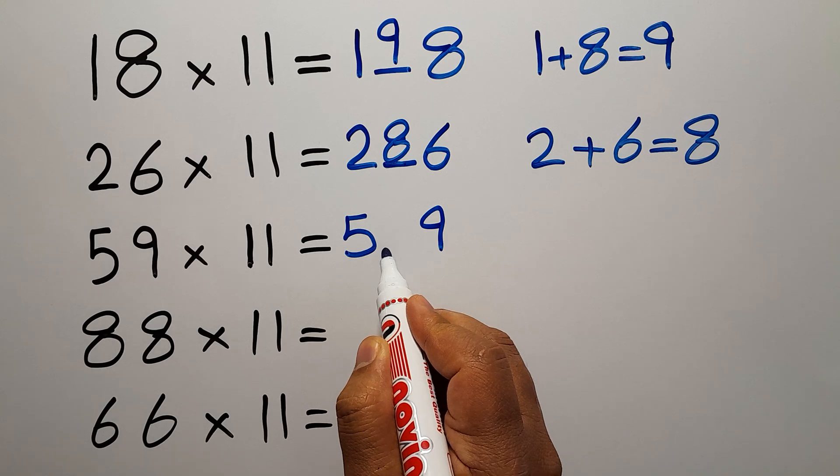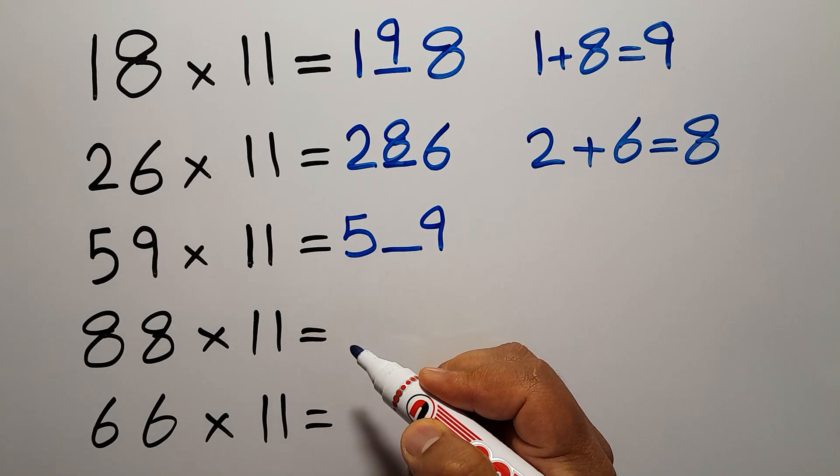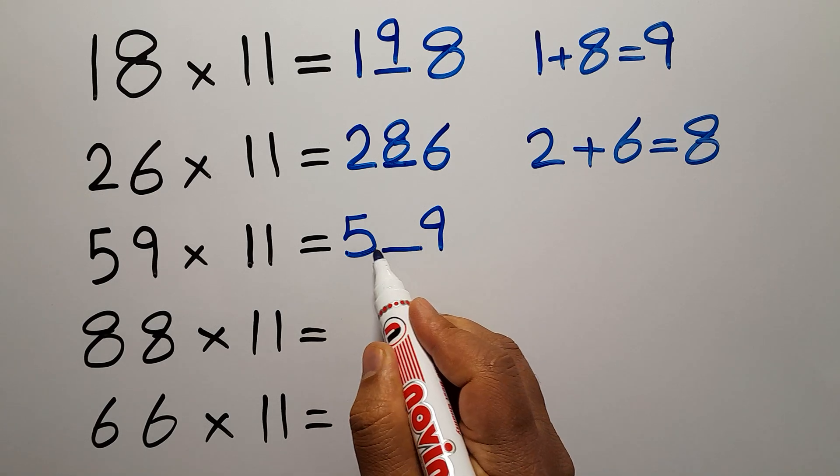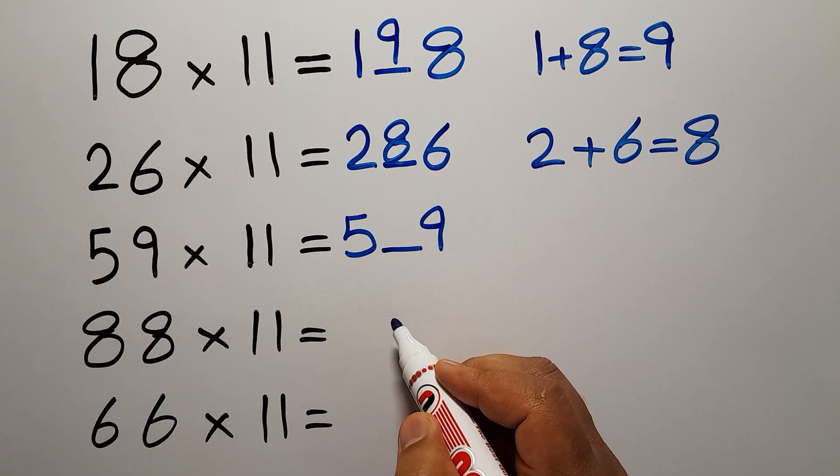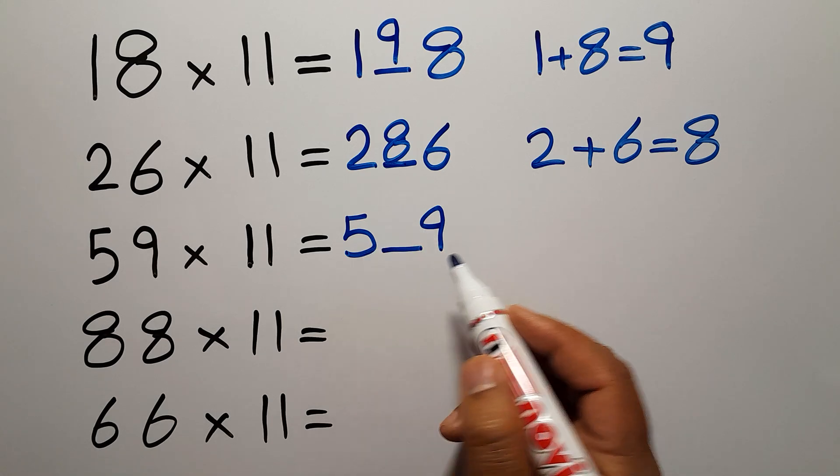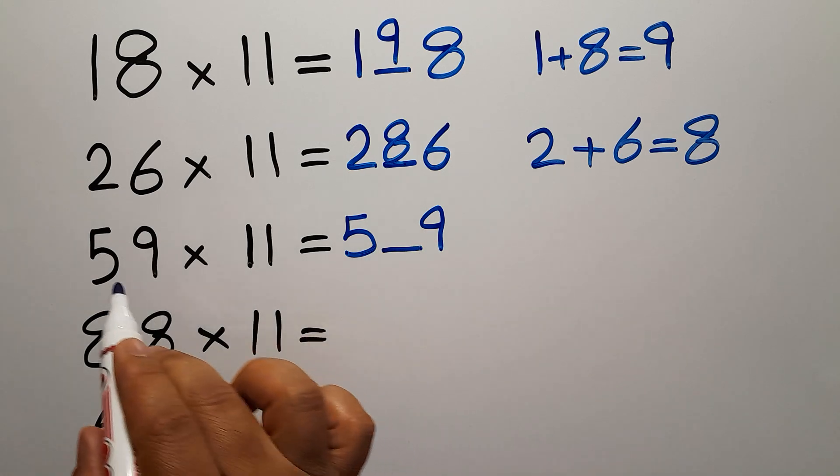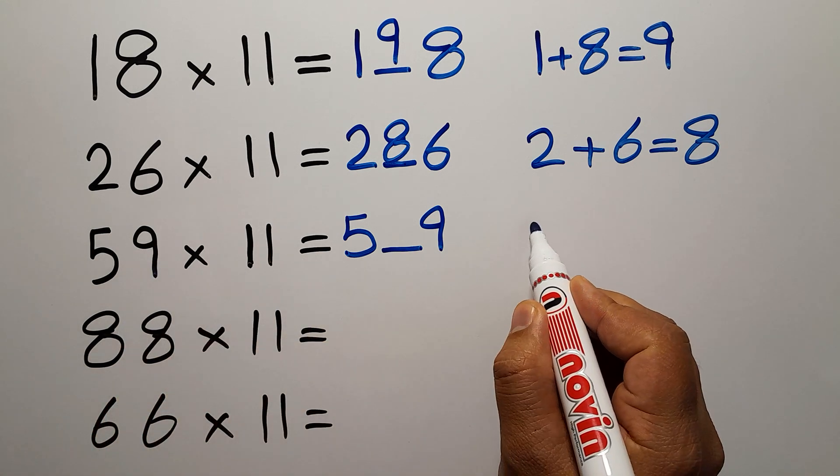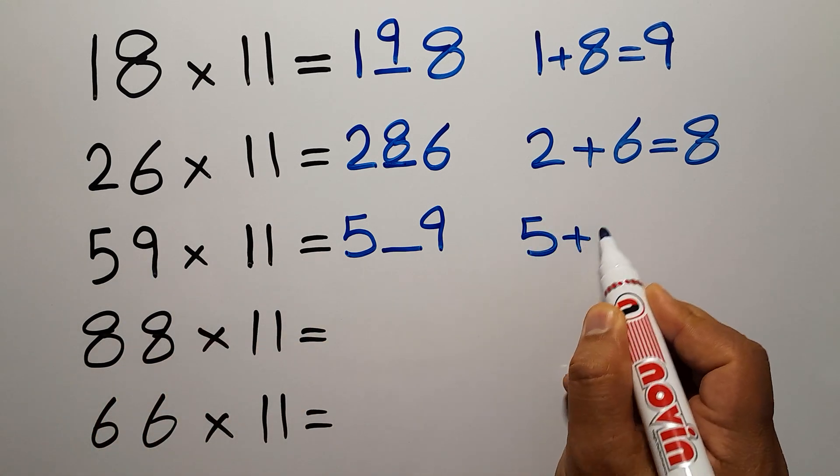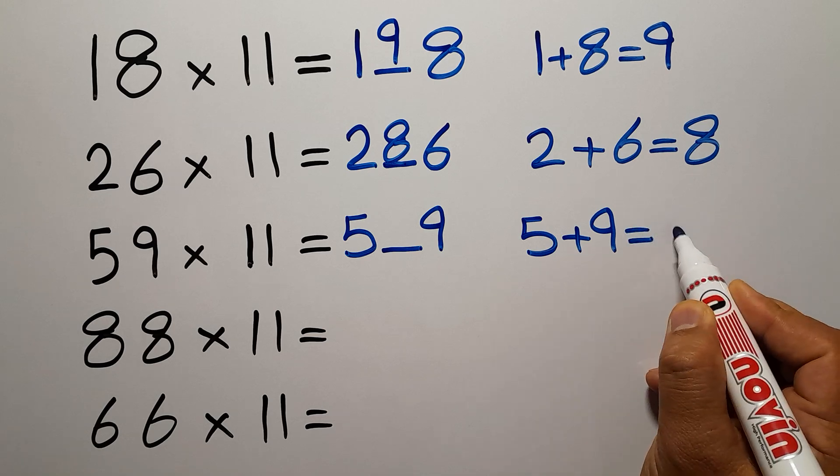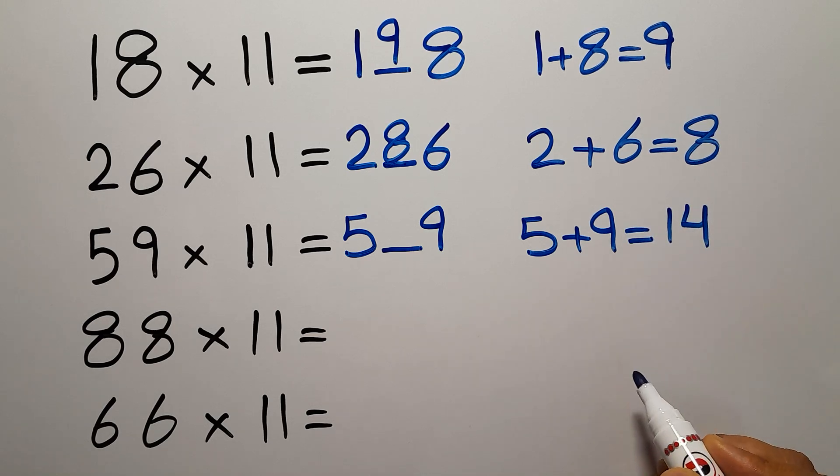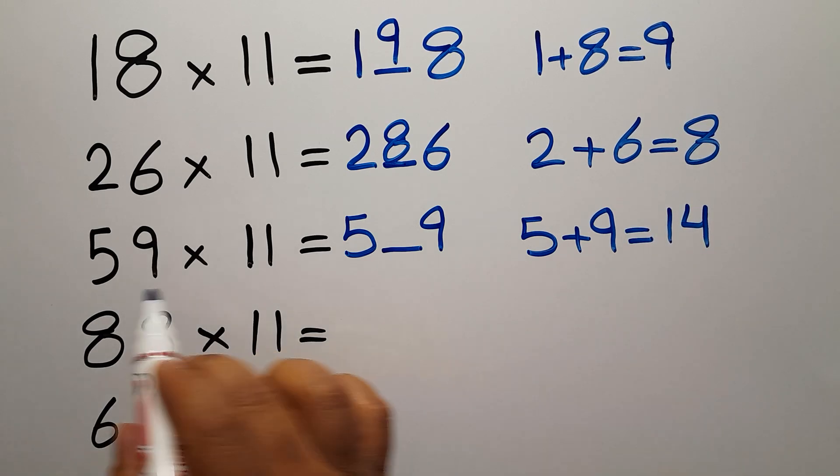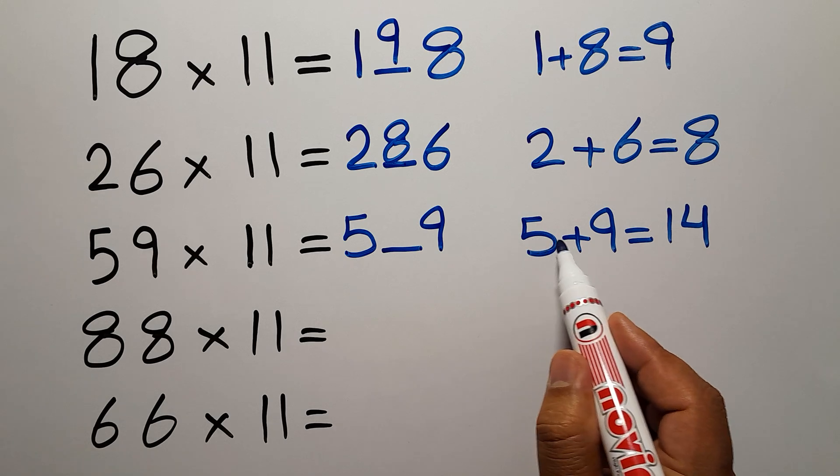First we write 5 and 9, and in the center we have a blank space. So 5, a blank space, and 9. To fill the blank space we need to add 5 and 9. So 5 plus 9 gives us 14.